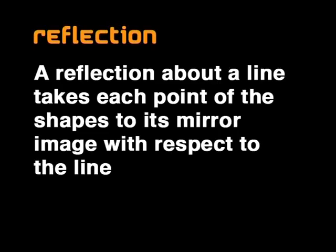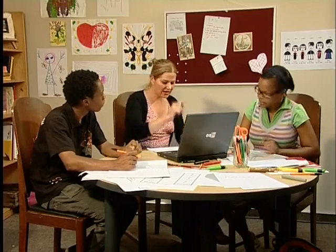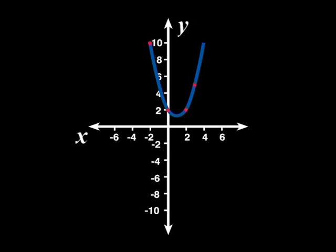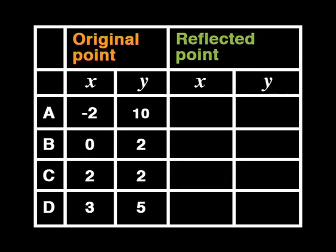Our definition should help. Remember it spoke about each point being moved to its mirror image about the line of reflection. To help us describe this transformation using function notation, let's select some points and draw up a table just like we did before.